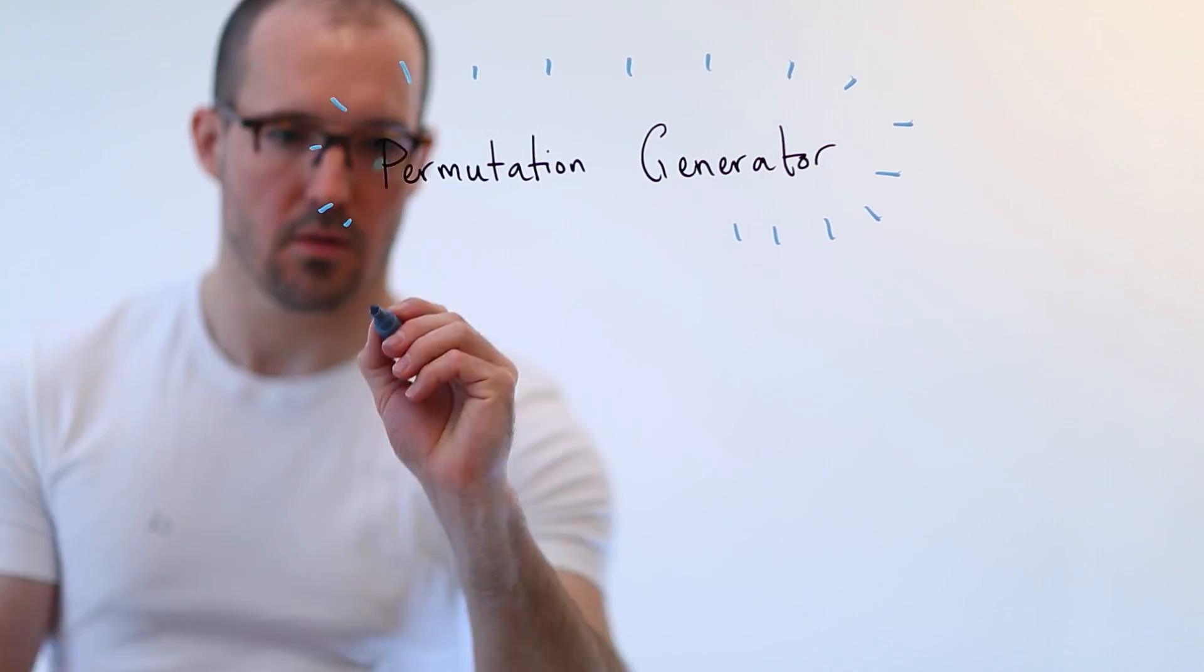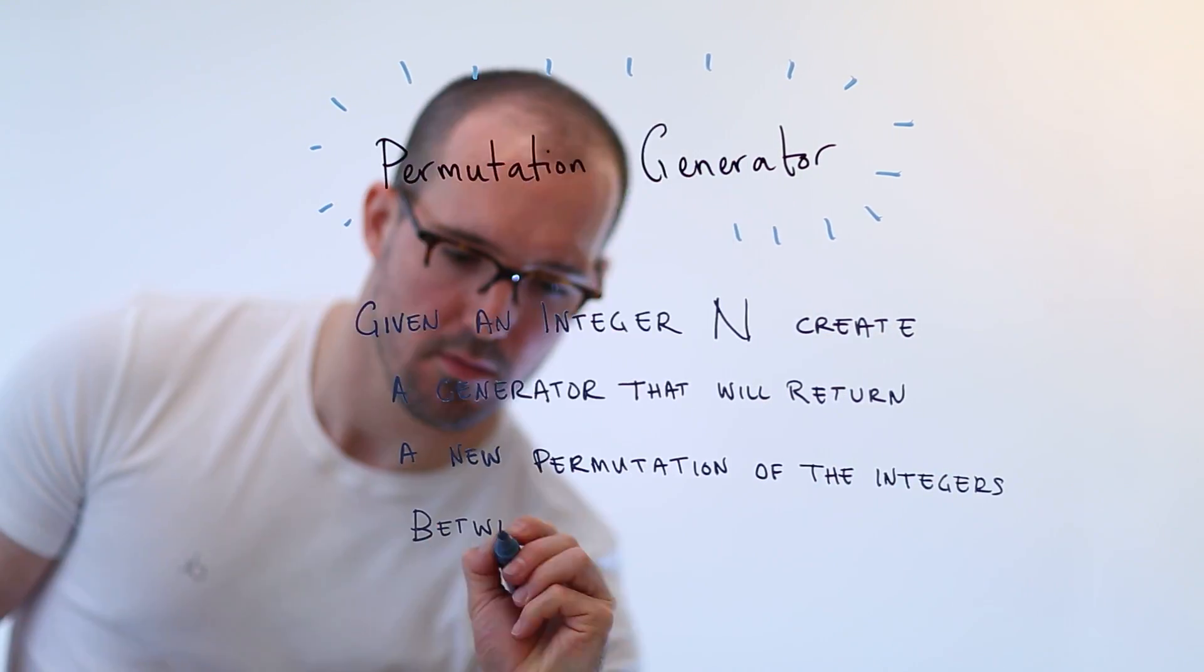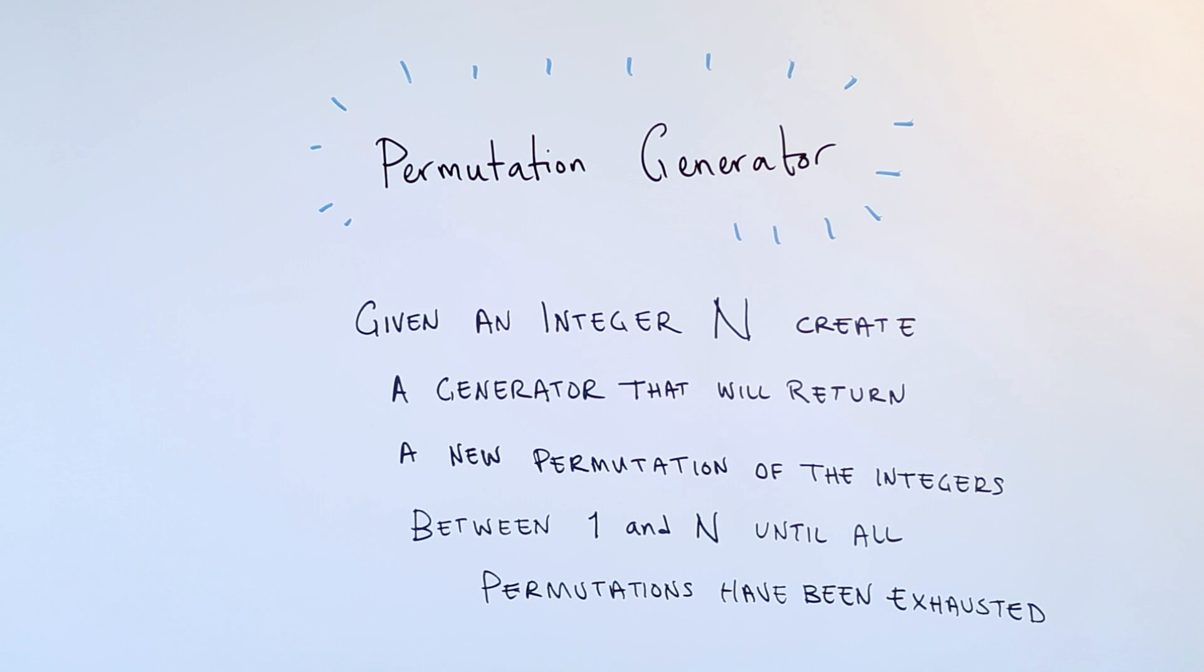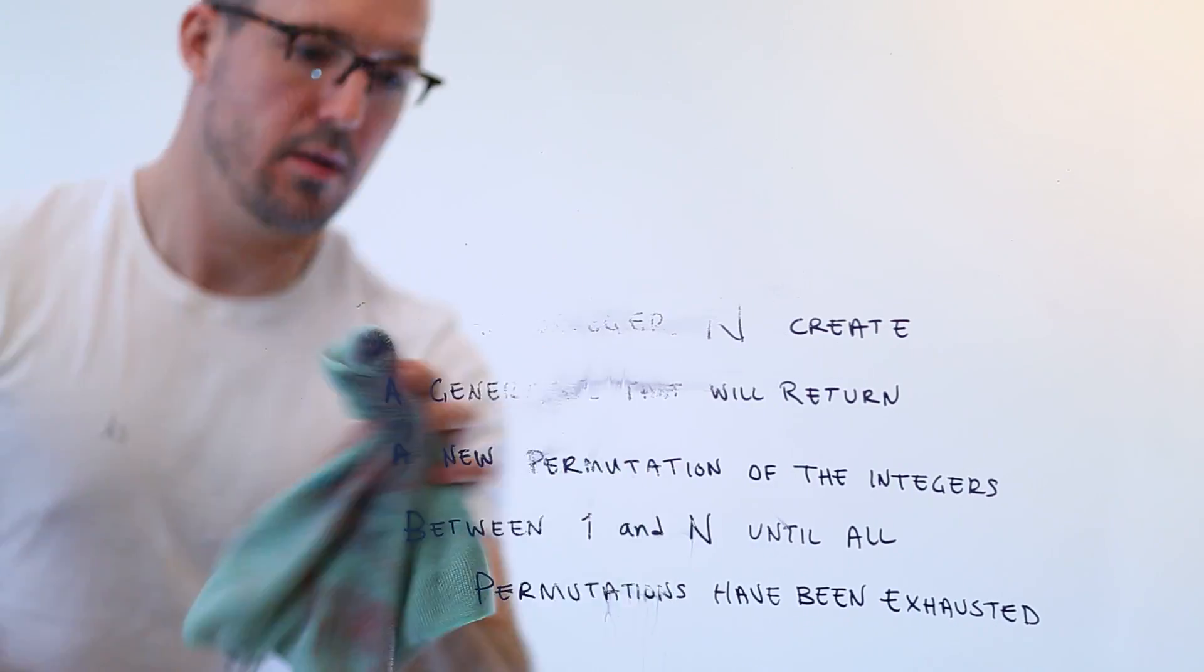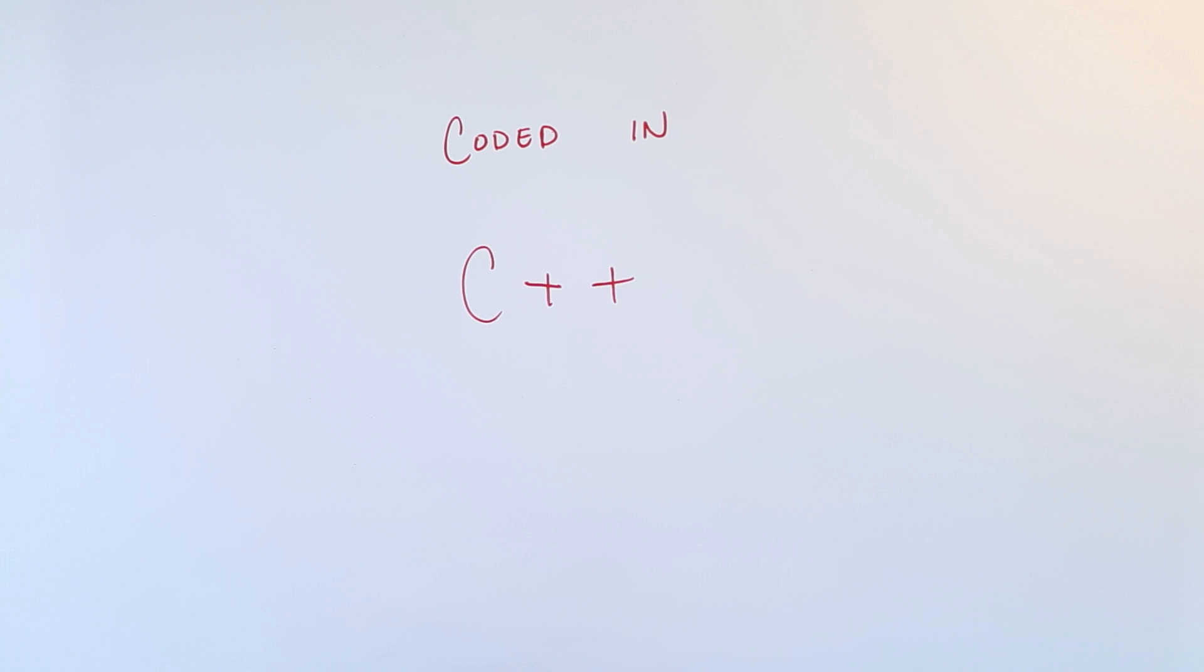Here's the setup. The challenge is to create a generator function that will take an integer n and this generator when called will return a new permutation of the numbers between one and n until all of the permutations have been exhausted. So for instance if the input was four, the generator would start by returning one two three four and then on the next call it would be one two four three and then one three two four and so on until we've exhausted all of the possible permutations. And today we're going to code in C++. That's right everyone's favorite weird language.